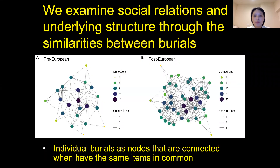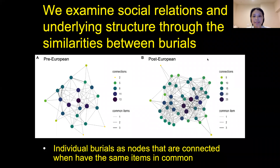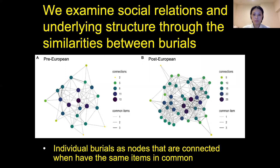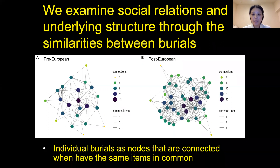We use burials as a proxy to examine social relations and underlying structure through the similarities between burials, based on the theory that burials with the same prestigious goods tend to have the same status. To construct networks based on similarities, we treat each burial as a node connected to other nodes when they share the same foreign trade items. The networks constructed here are undirected and weighted, since burials can have more than one item in common.